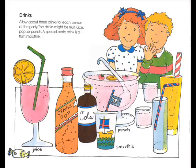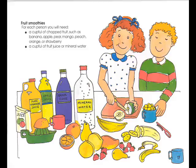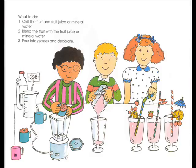Fruit smoothies: For each person you will need a cup full of chopped fruit such as banana, apple, pear, mango, peach, orange, or strawberry, and a cup full of fruit juice or mineral water. What to do: Chill the fruit and fruit juice or mineral water. Blend the fruit with the fruit juice or mineral water. Pour into glasses and decorate.